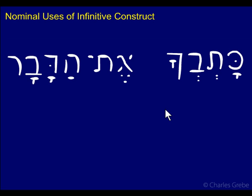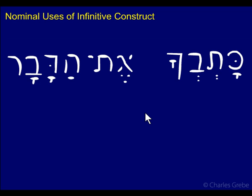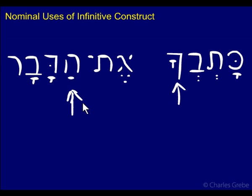Here we have 'kotvecha et hadavar.' This is interesting because we have a pronominal suffix on the infinitive construct. Notice the kamats katan — this is our normal change to the base when we add a pronominal suffix. So 'kotvecha' — the pronominal suffix marks the subject, and 'et hadavar' marks the explicit object. It's quite common to mark the subject with a pronominal suffix and the object with a noun.